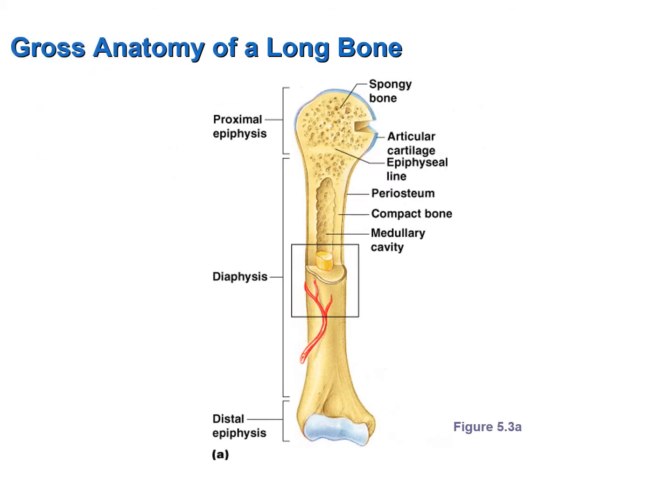Let's now talk about the gross anatomy of a long bone. For our discussion, we'll be looking at this figure. This illustration shows the humerus of the arm — the single bone found in the brachial region of the body. This figure is similar to figure 6.3 in your book. Recall that long bones are longer than they are wide. All of the bones of your appendages are long bones except the carpals of the wrist and the tarsals of the ankle.